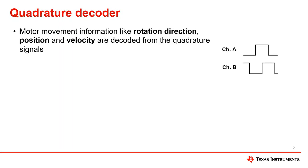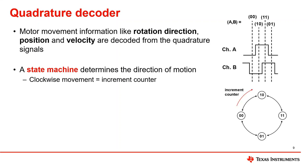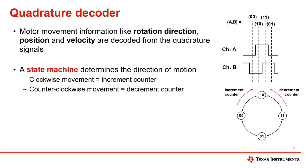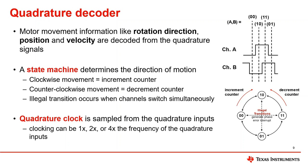Let's take a closer look at how the quadrature decoder generates clock and direction information from the quadrature signals. An internal state machine determines the direction of motion based on the transitions of the two quadrature channels. Typically, a clockwise movement is associated with incrementing the position counter, and a counterclockwise movement decrements the counter. Since the two channels must always have a phase difference of 90 degrees, they cannot switch states at the same time — this represents an illegal transition in the state machine and triggers an error interrupt. The generated quadrature clock is sampled from the quadrature inputs, dependent on which edges are sampled from which channels. For the highest resolution, the clock can be sampled from the rising and falling edges of both signals, resulting in a quadrature clock that is four times that of the input signals.